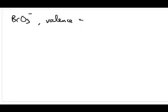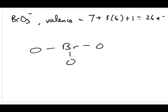The next molecule is BrO3⁻. Adding up: bromine has 7 valence electrons, three oxygens contribute 18, plus one for the charge, giving 26 electrons total. Bromine is the central atom. Satisfy the octet rule for each oxygen first — four lone pair electrons around each oxygen uses 24 electrons — then put one lone pair on bromine to give it an octet. That's the Lewis structure for this ion.